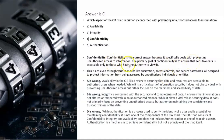Confidentiality deals with preventing unauthorized access — the primary goal is to ensure that sensitive data is accessible only to those with authority to view it. Availability is wrong because it refers to ensuring data and resources are accessible to authorized users when needed. Integrity is wrong because it concerns accuracy and completeness of data. Authentication is wrong — it's a process used to verify the identity of a user; it's essential for maintaining confidentiality but is not a component of the CIA triad. The exam will make sure you know what's part of the triad and what's not.